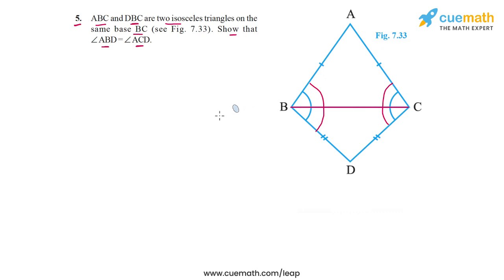This means that in triangle ABC, this angle ABC will be equal to this angle ACB. Then in triangle DBC, this angle DBC will be equal to this angle DCB. Now all we need to do is sum the two pairs and we will get angle ABD equal to angle ACD.